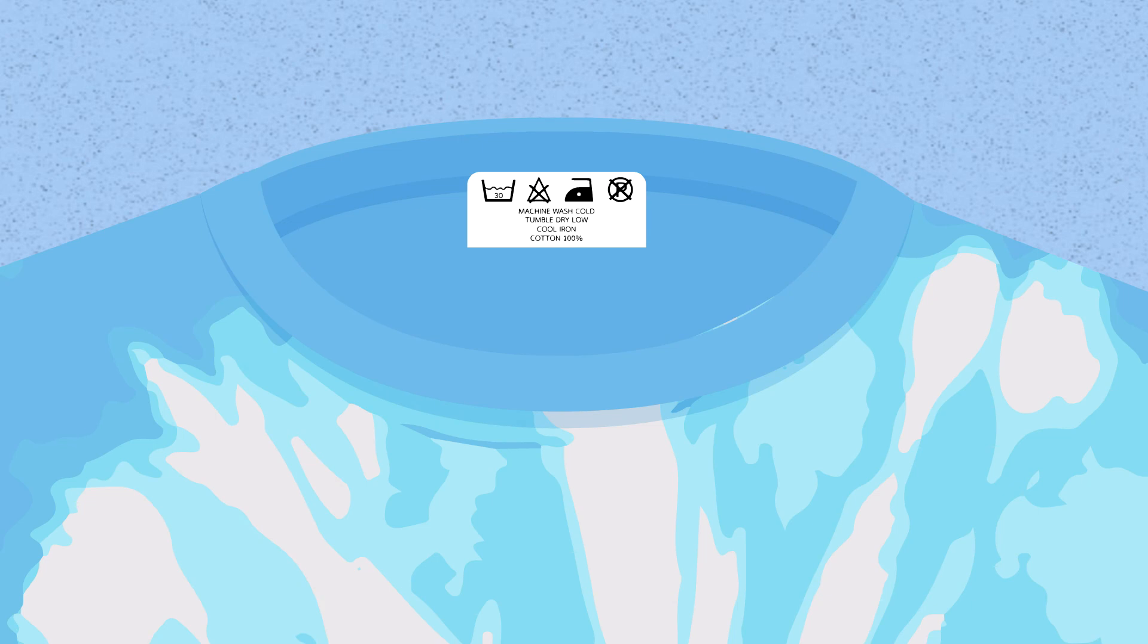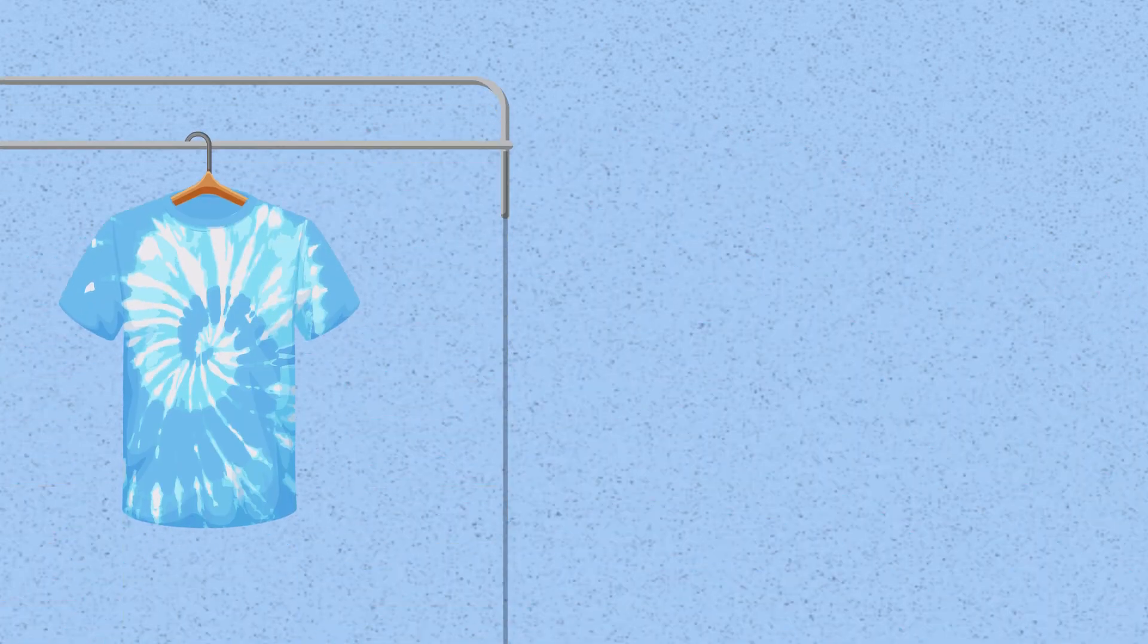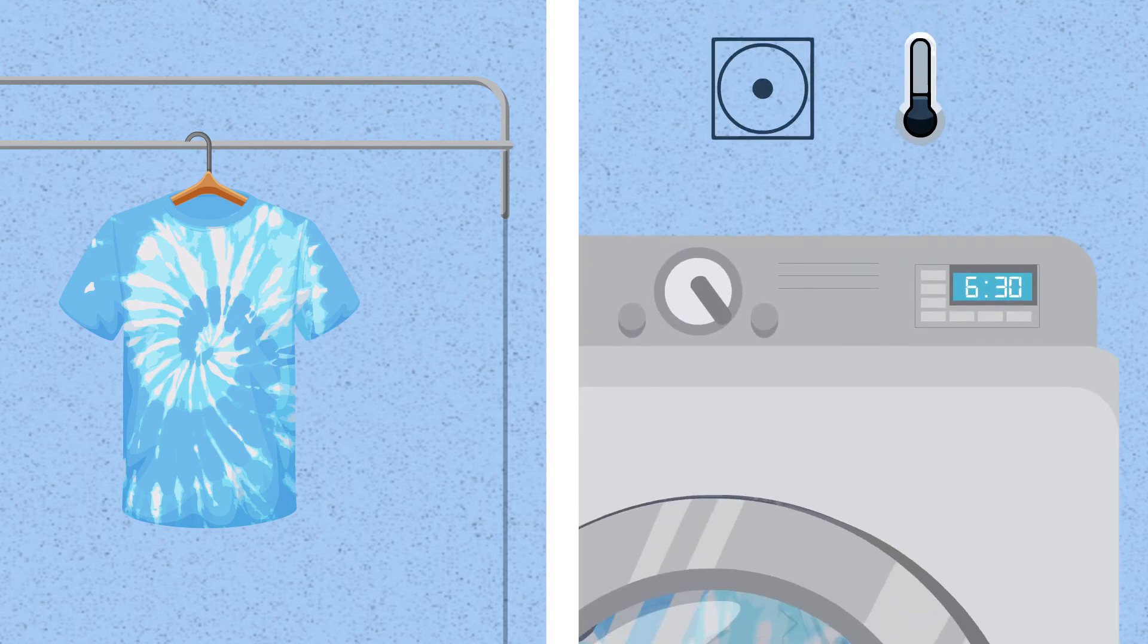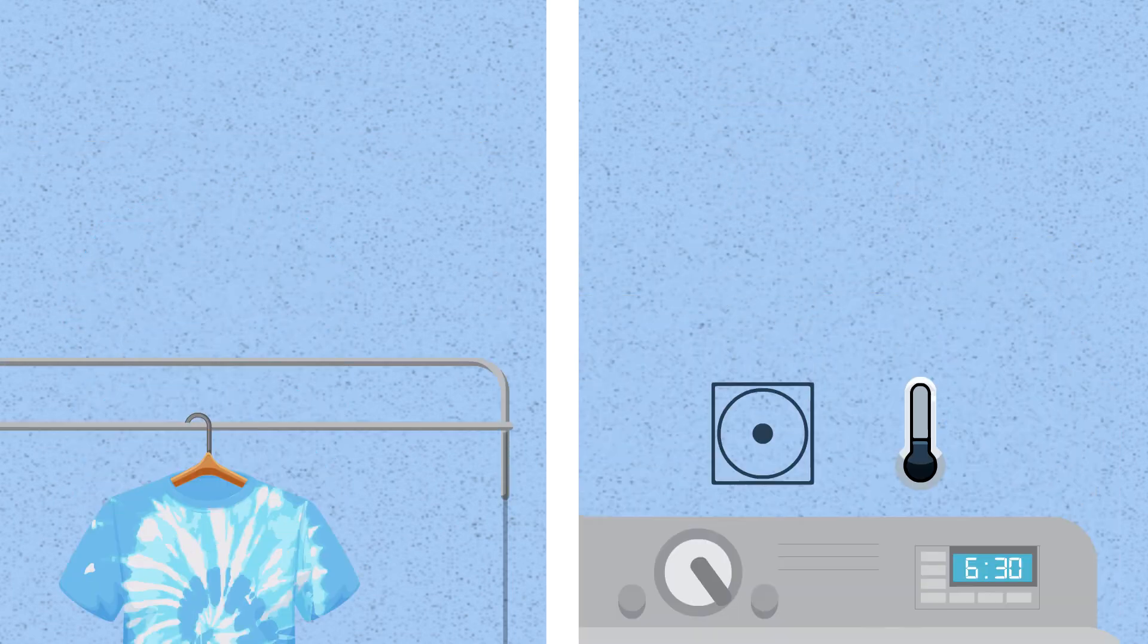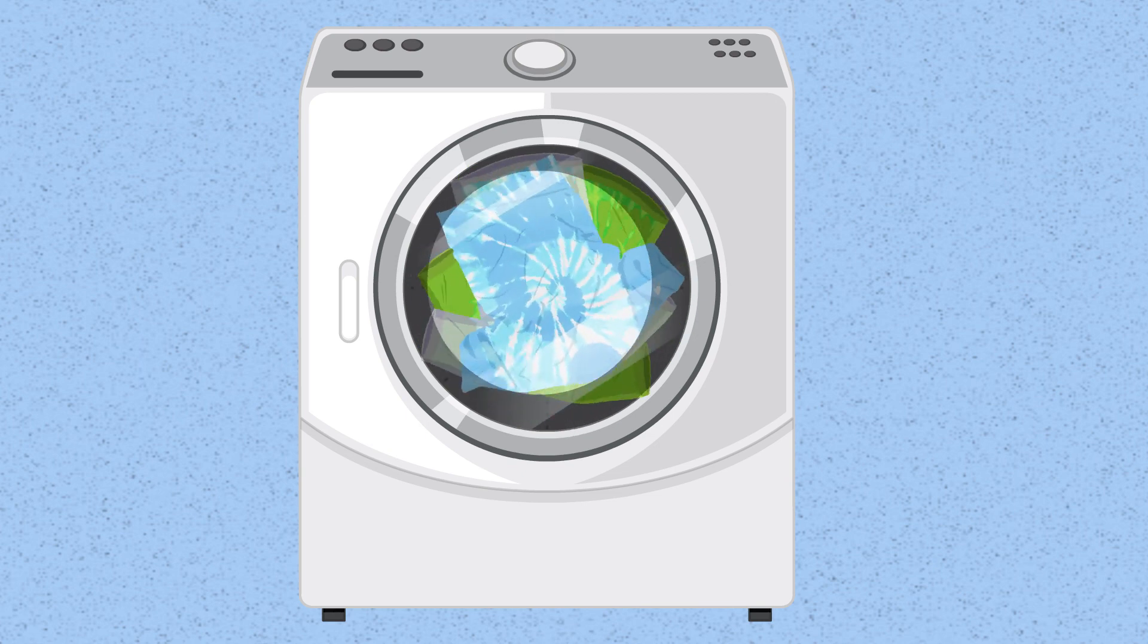Check the tag on your fabric for the best way to dry your tie-dyed item. If it's delicate or prone to shrinking, let it air dry or tumble dry on a low-heat setting. Otherwise, it's usually fine to dry tie-dyed fabrics in the dryer with the rest of your clothes.